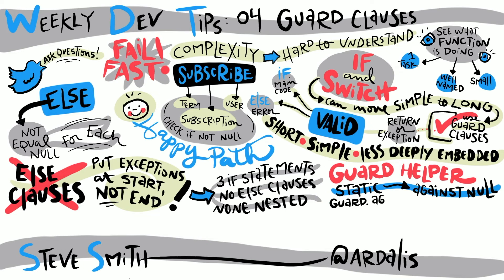When you implement this in the scenario I described, you end up with code that reads like this. The first line of the function would say Guard.AgainstNull, and then in its arguments, you would pass in user, comma, nameof user, and then close the parentheses. Similarly, the next line would say Guard.AgainstNull, subscription, comma, nameof subscription. And the third line would say Guard.AgainstNull, term, comma, nameof term. With these three lines in place, you can now perform all of your null checks for this function's arguments, and then you can proceed on to perform the work of the function.